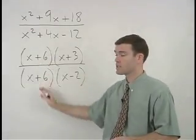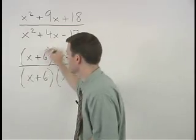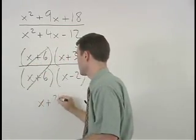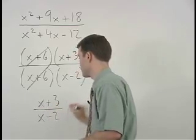Notice that our x plus 6's can now cancel out. And we're left with x plus 3 over x minus 2.